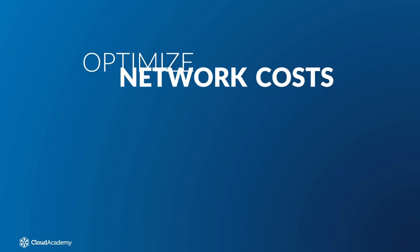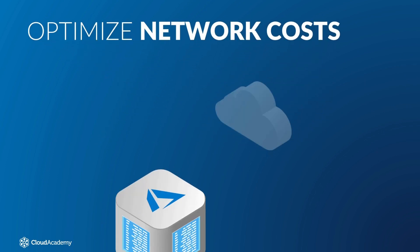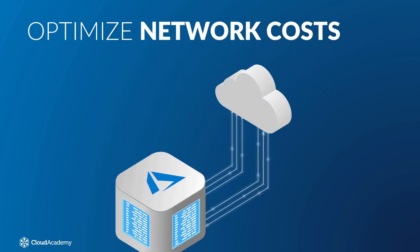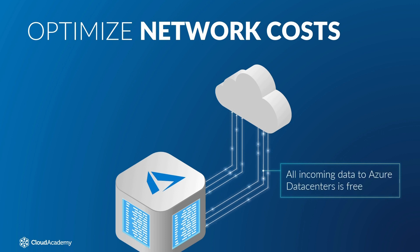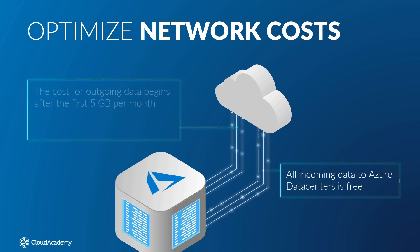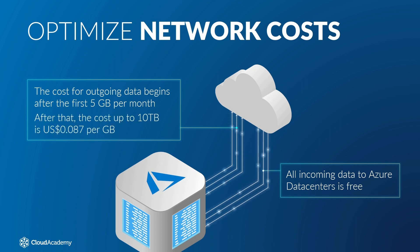Azure networking costs are strictly limited to egress or outbound bandwidth. All incoming data to Azure data centers is free, while the cost of outgoing data begins after the first five gigabytes per month and is tiered based on usage. The cost for outbound data up to 10 terabytes is 8.7 cents per gigabyte after the first five.